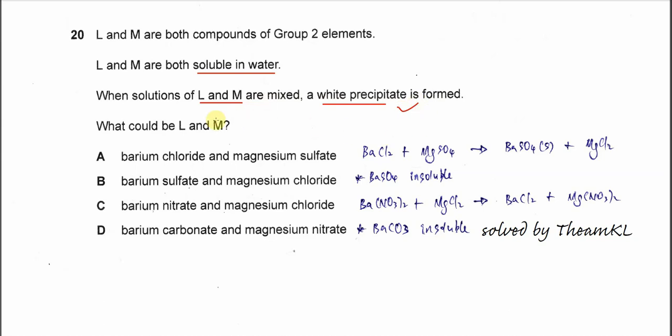So this is the key. What could be L and M then? For A, barium chloride and magnesium sulfate.